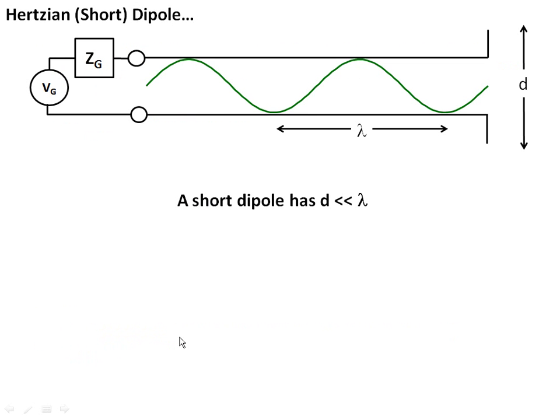The Hertzian dipole antenna really is just our bent transmission lines we talked about last time. We talk about a short or Hertzian dipole under particular conditions. The length of the antenna from the top of the bend to the bottom of the bend, which we're going to call d, is much much less than the wavelength on the transmission line.